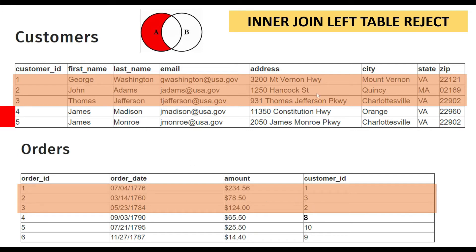When we make a join with these two tables, we find three matching entries. But what we want after performing the join is the rejected records from the left table — that's basically customer ID four and five. These two are not matching, and that's why I name it inner join left table reject.